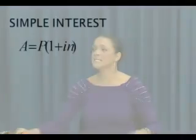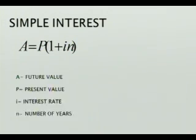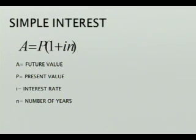The first thing we're going to look at this afternoon is simple interest. If you look at the simple interest formula, you will see that A is equal to P open bracket one plus I times N. What do all these letters stand for? A is for your future value — remember, future value is what you are waiting for. P is the present value — present value is what you are going to start with, and future value is what you're going to end off with. I is your interest rate and N is your number of years. That's your simple interest formula, and we're immediately going to go to our first example.